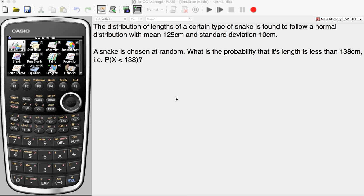This video will show you how to calculate a probability from a normal distribution using your Casio GDC. So here's a question.